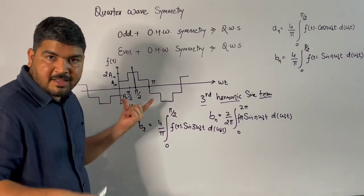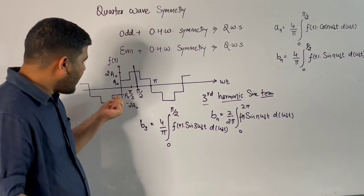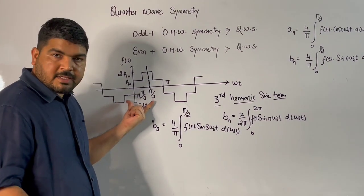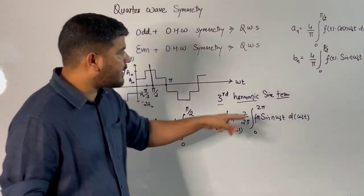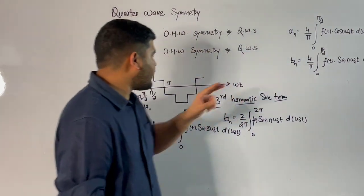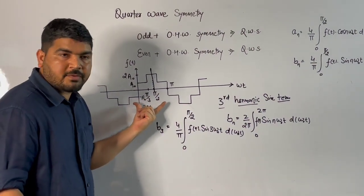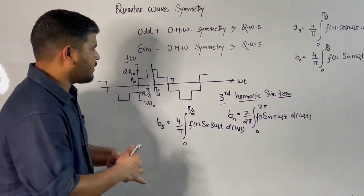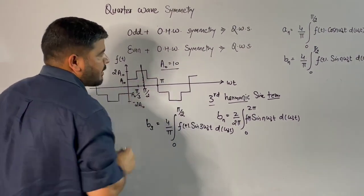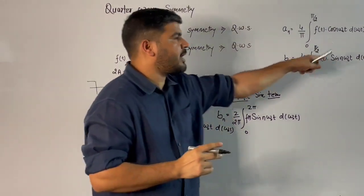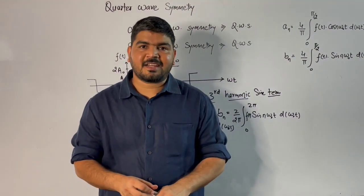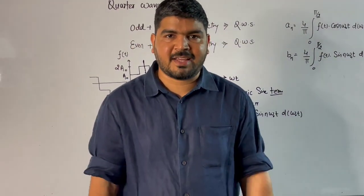Now, the question is: please comment in the comment section — what is the amplitude of the fifth harmonic in this waveform? Use this quarter wave symmetry, put n equal to 5, and calculate the amplitude of the fifth harmonic. Take a₀ equal to 10 and comment your answer in the comment section. I hope you enjoyed this trick. See you in the next video. Thank you and take care.